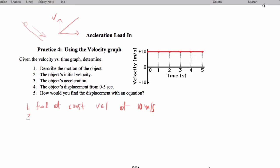The initial velocity is zero. There's no acceleration. And the displacement from zero to five seconds is the area, which is going to be 10 times 5, which is 50 meters.